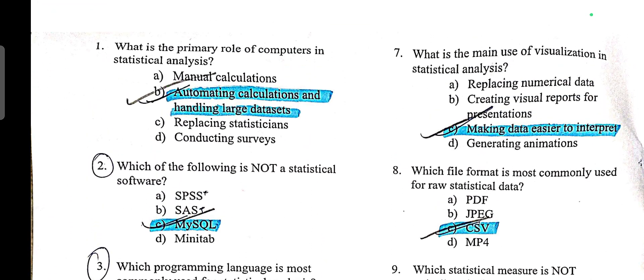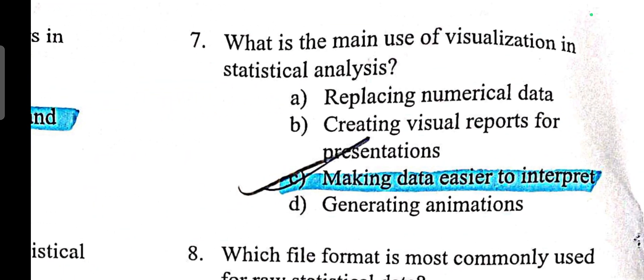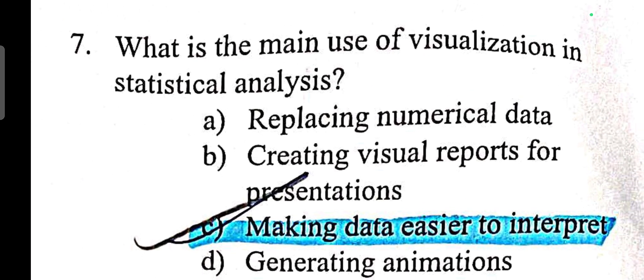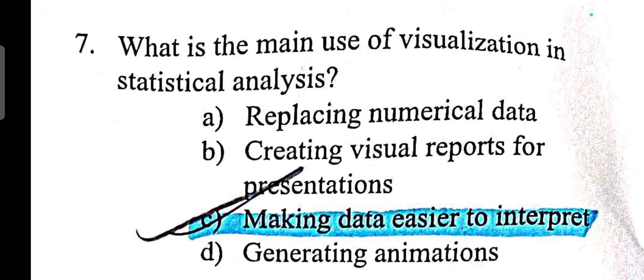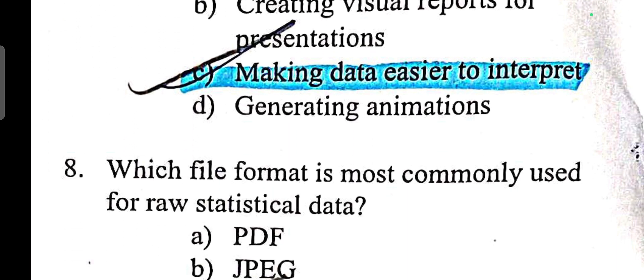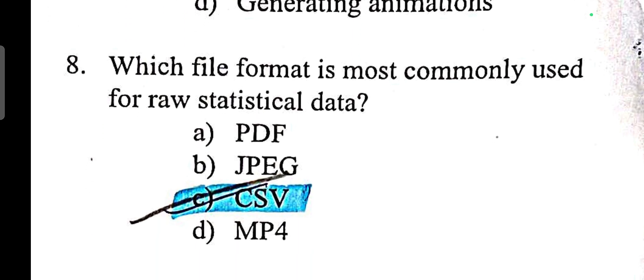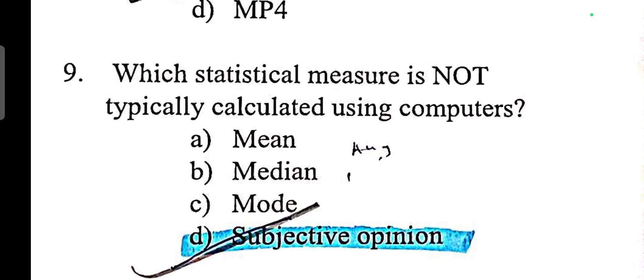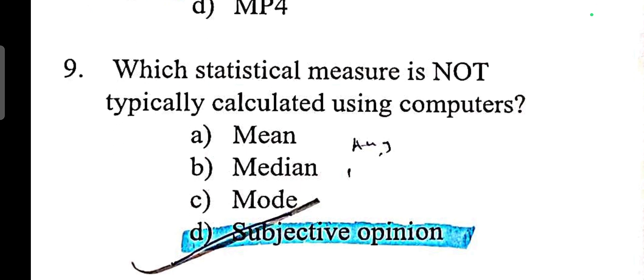What is the main use of visualization in statistical analysis? Making data easier to interpret. Which format is most commonly used for raw statistical data? CSV. CSV is full form comma separated values. Which statistical measure is not typically calculated using computer? Subjective opinion.